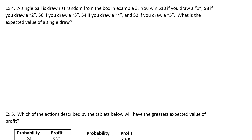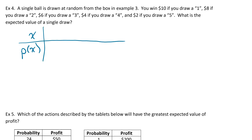Example 4. A single ball is drawn at random from the box in example 3, which means we're going to use the same probabilities as in example 3. You win $10 if you draw a 1, $8 if you draw a 2. We set up our table with x as the money values and p of x as the probabilities. The probability of drawing a 1 is 2/10 — same as before — and the probability of drawing a 2 is 3/10.